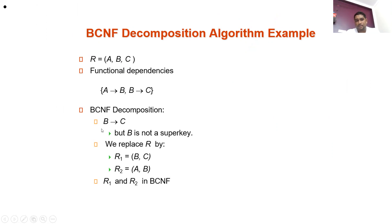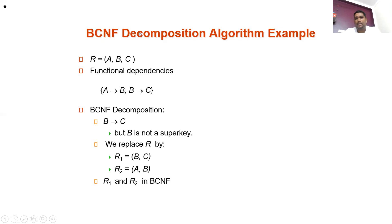Final example: R = (A, B, C) with functional dependencies A→B and B→C. A→B is valid since A is a super key. B→C is not valid because B is not a super key. Therefore we divide into two relations: R1 = (B, C) and R2 = (A, B). Now B is a super key for R1 and A is a super key for R2, satisfying BCNF. I hope you understand the concept of BCNF. Thank you.